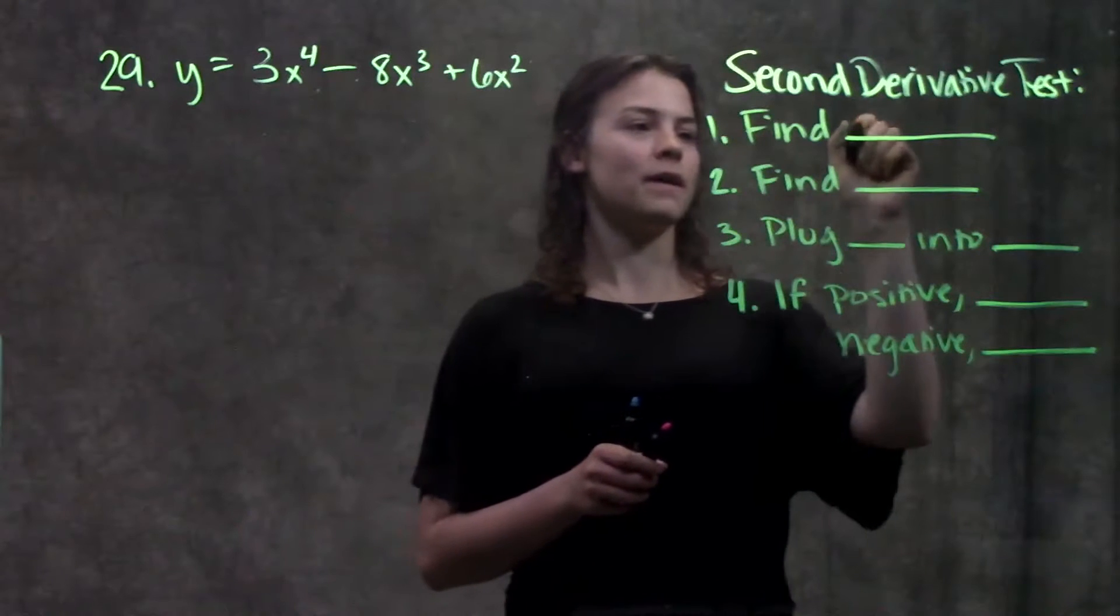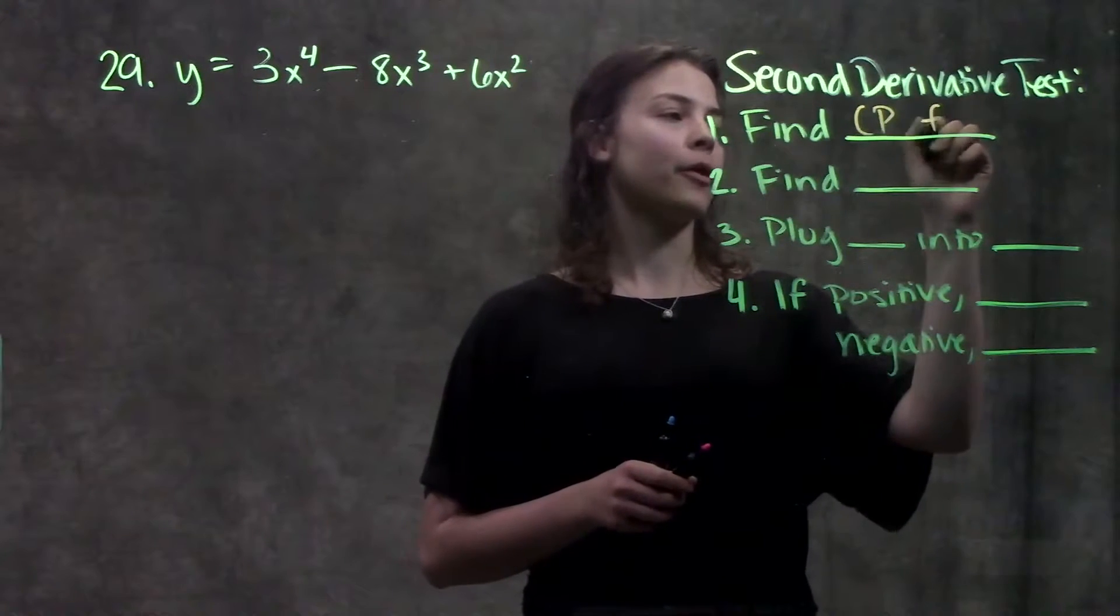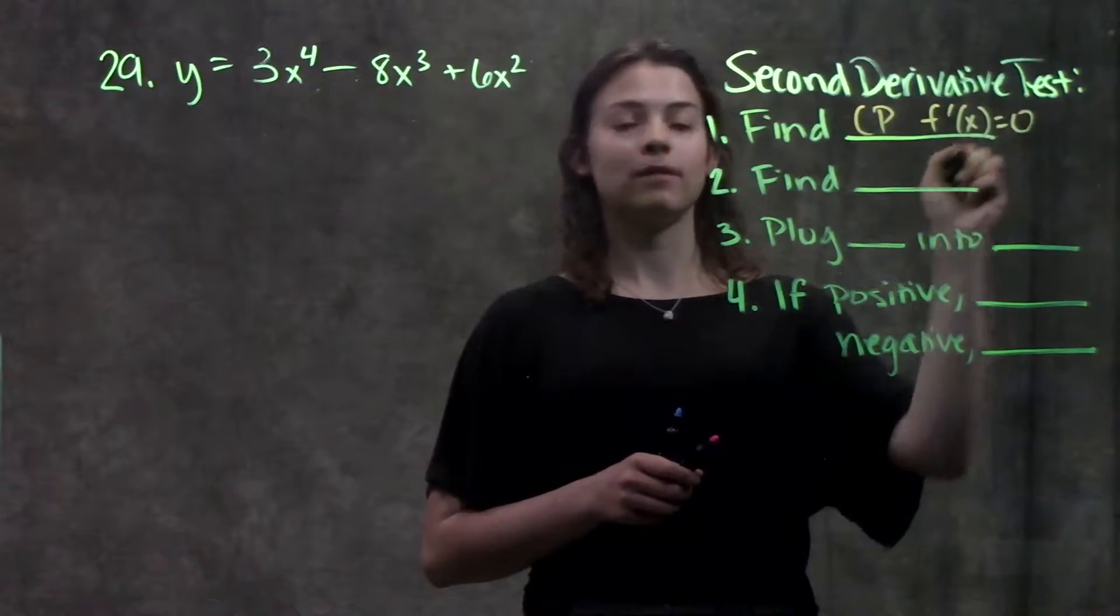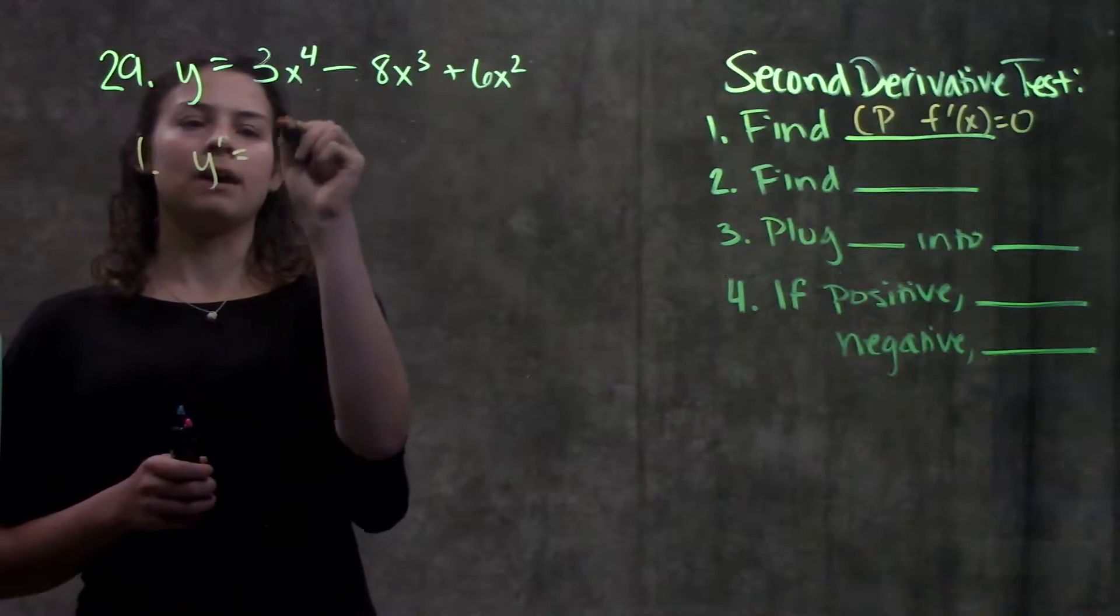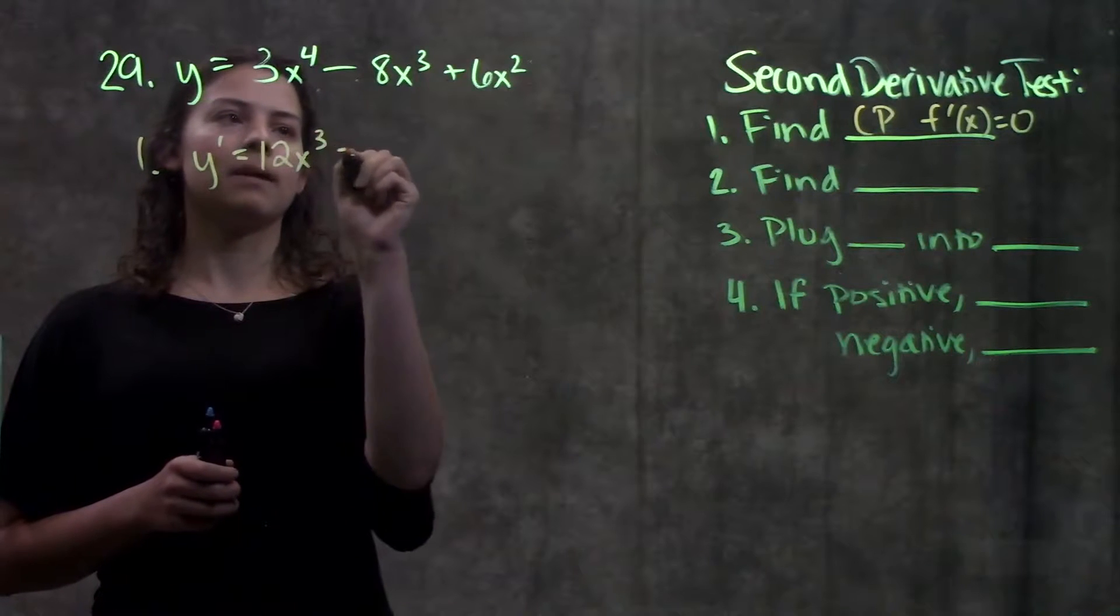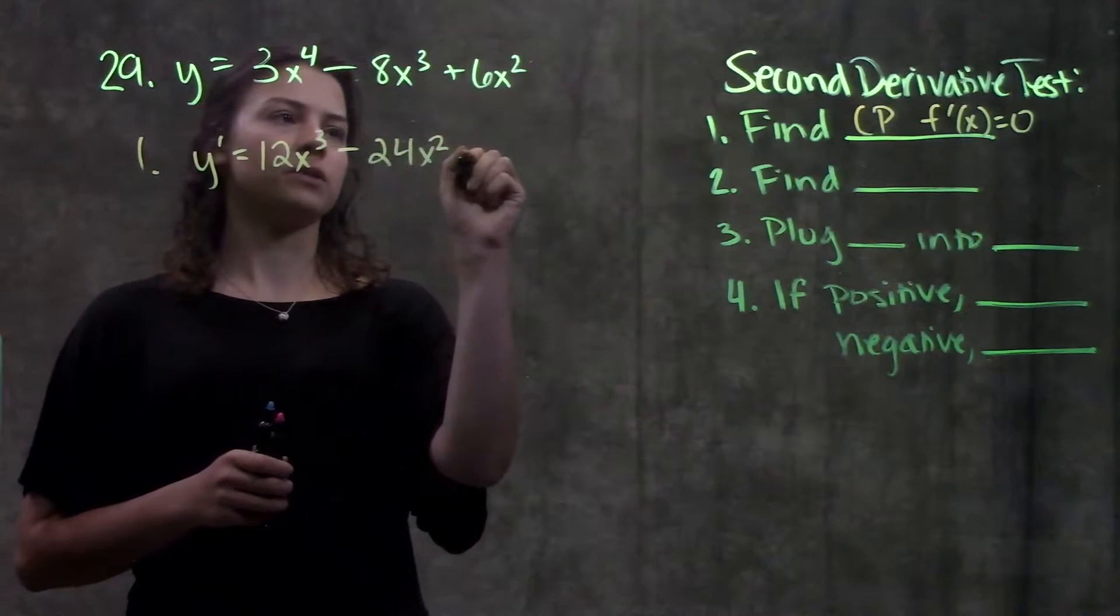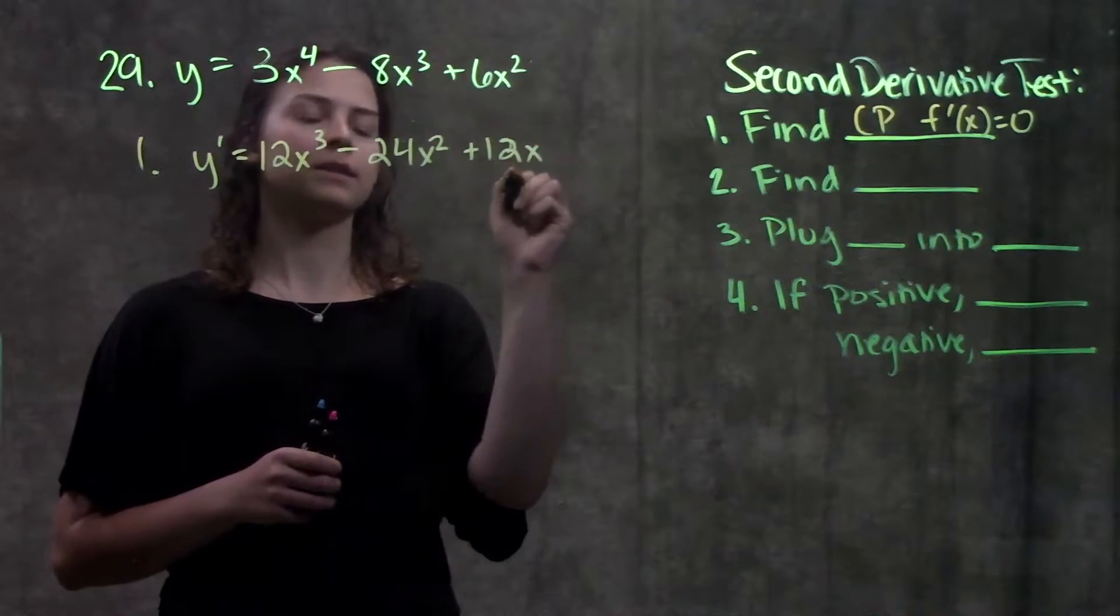Step one is find our critical points. Remember, critical points are wherever the first derivative equals zero. So I go over here, step one, find my first derivative, and using my power rule, I get that my first derivative is this function.